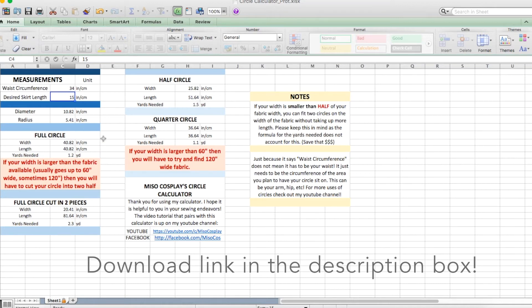The calculator is also sectioned out by types of circles you need with a full circle, a full circle cut into two pieces, a half circle, and a quarter circle. I've also made a part where it tells you how much yards of fabric you'll need based on what circle you choose.